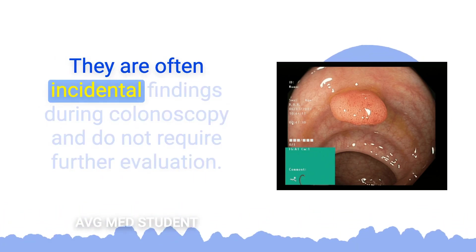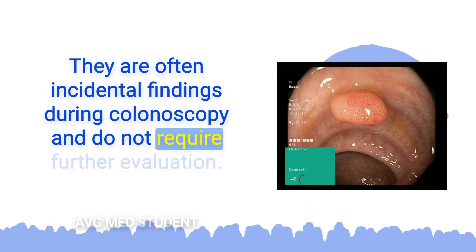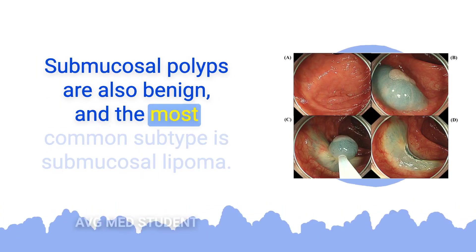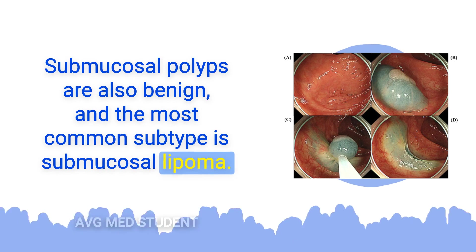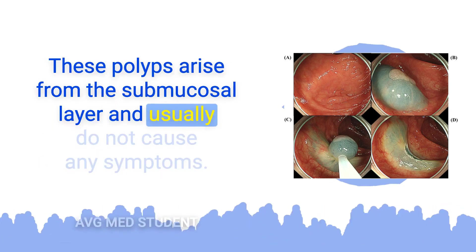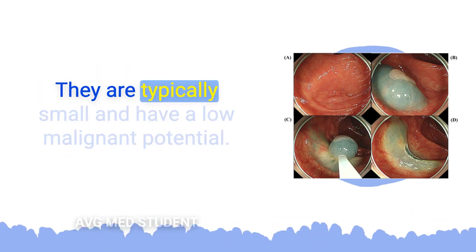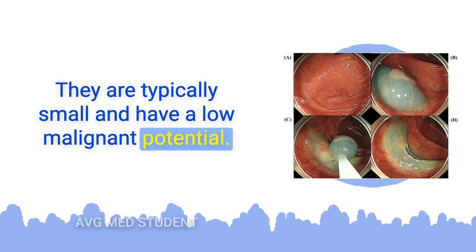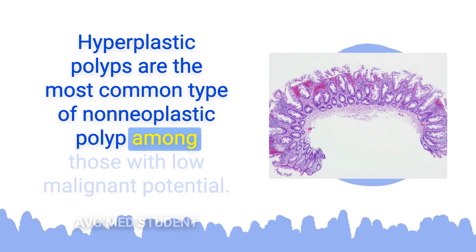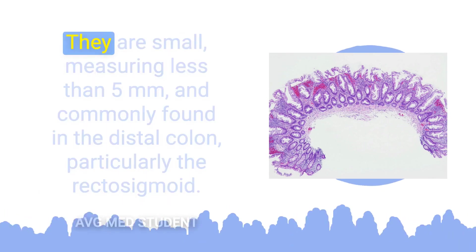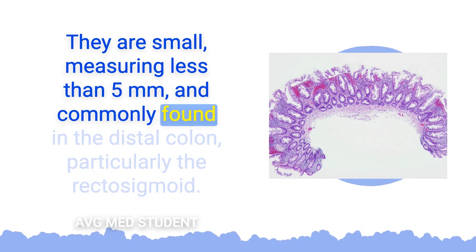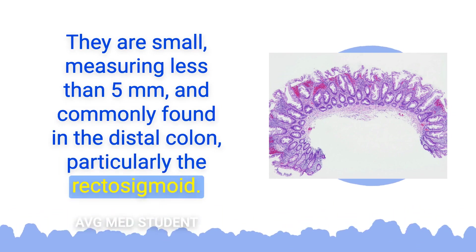Mucosal polyps are often incidental findings during colonoscopy and do not require further evaluation. Submucosal polyps are also benign, and the most common subtype is submucosal lipoma. These polyps arise from the submucosal layer, usually do not cause symptoms, and have a low malignant potential. Hyperplastic polyps are the most common type of non-neoplastic polyp; they are small, measuring less than 5 mm, and commonly found in the distal colon, particularly the rectosigmoid.